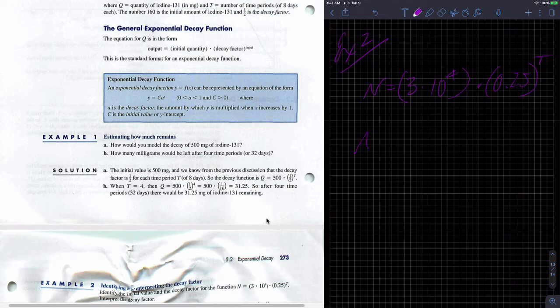So I have N equals three times 10 to the four times 0.25 to the T. So N is however much I have when I'm done. So that's my dependent variable. T is my independent variable. We don't know what it represents. We could assume it's time since it's T, but I don't know.